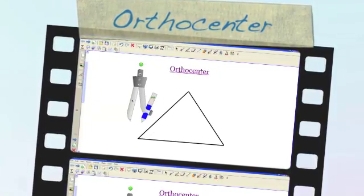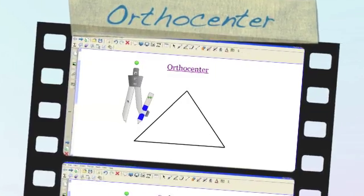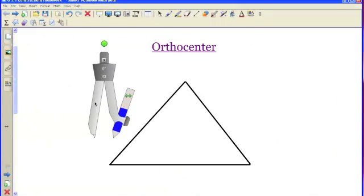We're going to create the orthocenter today. The orthocenter is created by constructing three altitudes of a triangle. An altitude is a segment that goes from the vertex of a triangle to the opposite side perpendicularly. So it's going to hit the opposite side at a right angle.